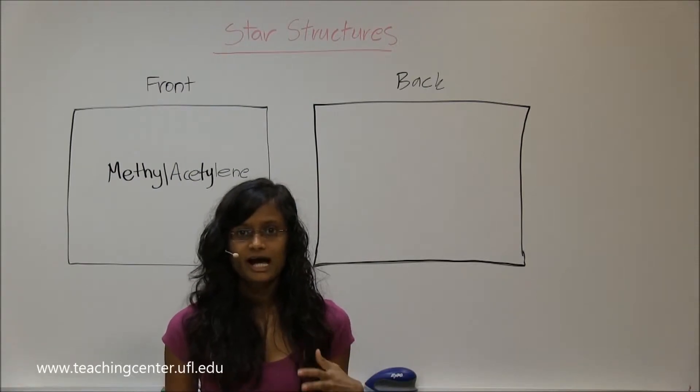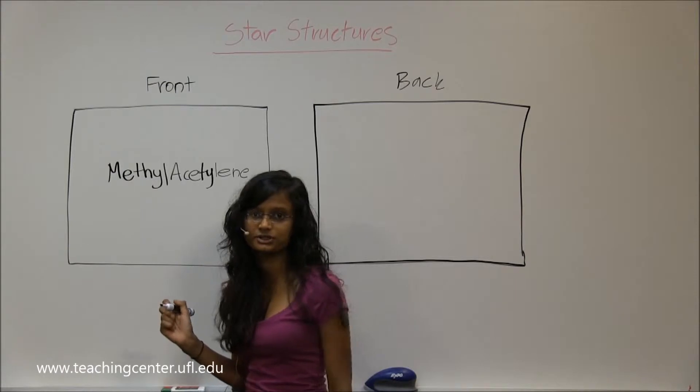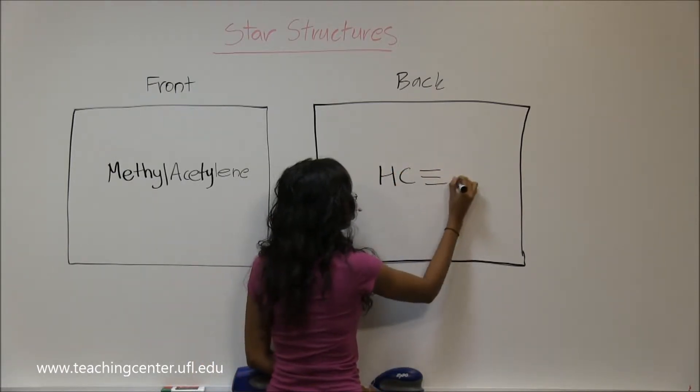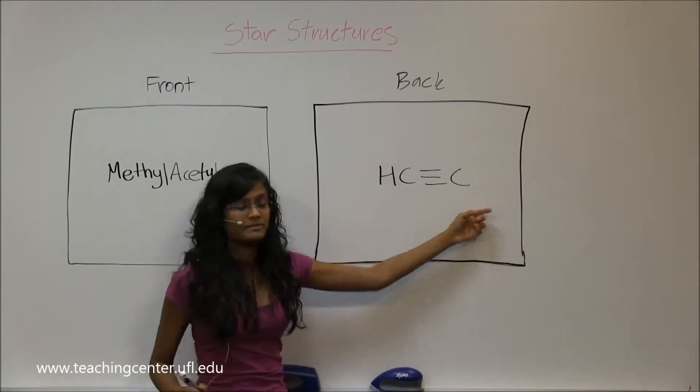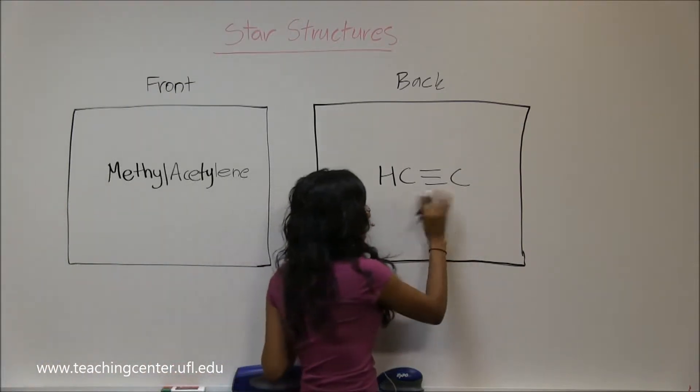Earlier we had acetylene as the star structure with hydrogens next to the carbons. Now you have a methyl connected to the acetylene, so rather than having two hydrogens, you have one methyl in place of the hydrogen.